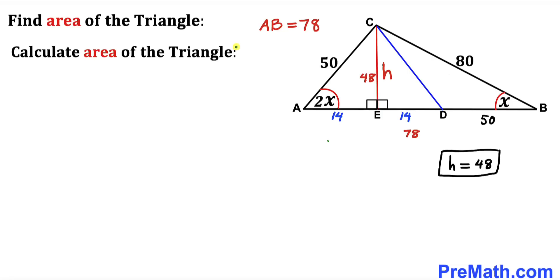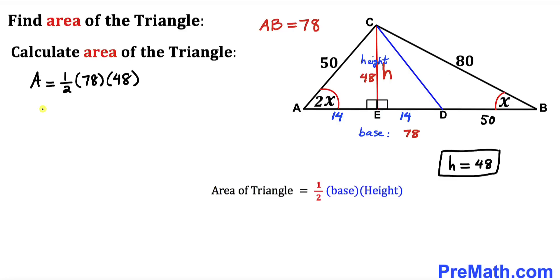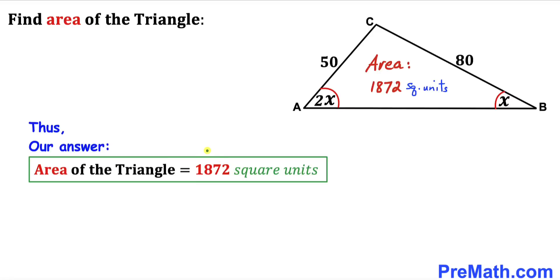For the final step, we calculate the area of triangle ABC. Using the formula: area equals one half times base times height. Our base AB is 78 and our height H is 48. So the area of triangle ABC equals one half times 78 times 48, which gives us 1872 square units.